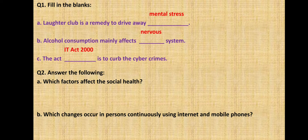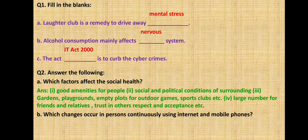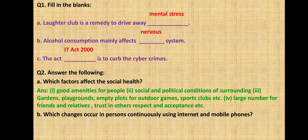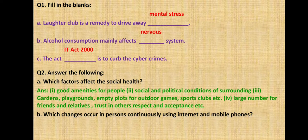Second question: which factors affect social health? You have to write in detail about the different factors. I had given you the points and headings; you have to elaborate them in your own words. The first factor is good amenities for people — in order to maintain social health there should be good amenities like food, water, shelter, clothing, medicinal health, equal opportunities for education, clean surroundings, and proper transport facilities.